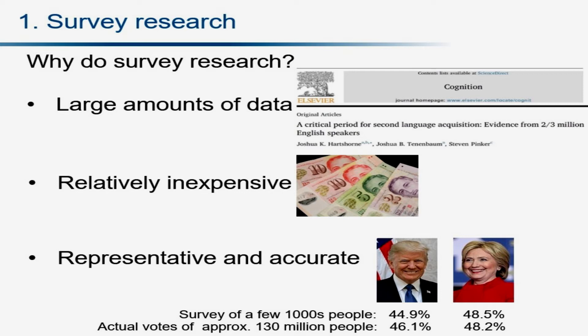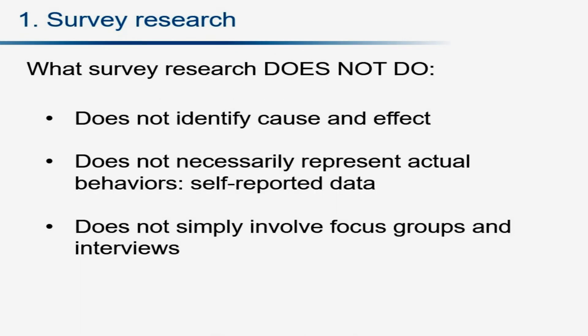Survey research is also representative and accurate in many cases. Here's an example from America. It was predicted that a presidential candidate would get 44.9% of the votes, based on sampling a few thousand people, and it turned out to be within 1% of the actual votes of about 100 million people. So you can see how accurate it can be. It was expected that Hillary Clinton was going to get more votes but she didn't end up being president — this example illustrates the power of surveys to get really accurate results.